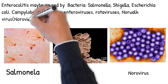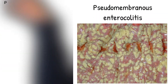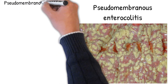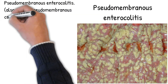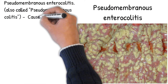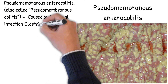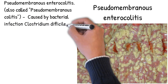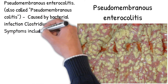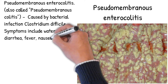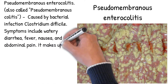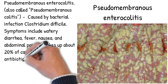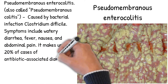There are different types of enterocolitis. Pseudomembranous enterocolitis, also called pseudomembranous colitis, is caused by the bacterial infection Clostridium difficile. Symptoms include watery diarrhea, fever, nausea, and abdominal pain. It makes up about 20% of cases of antibiotic-associated diarrhea.